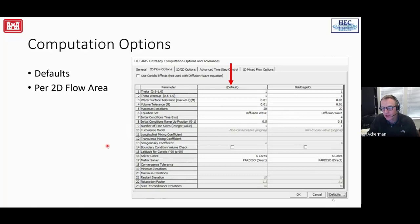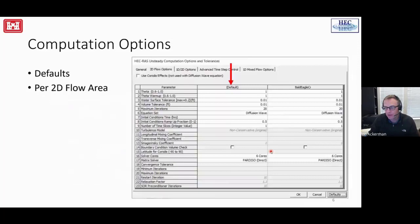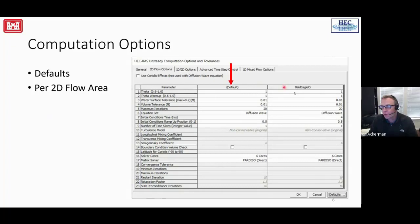Computation options and tolerances can be accessed through the options menu or quickly via the three ellipses button. In this window, there's always a default column on the left showing values that will be used unless overridden per 2D flow area. In this model there's one 2D flow area called Bald Eagle Creek. Scrolling through, very few options differ from defaults. Just know there's a default column, and settings must be set per 2D flow area column.